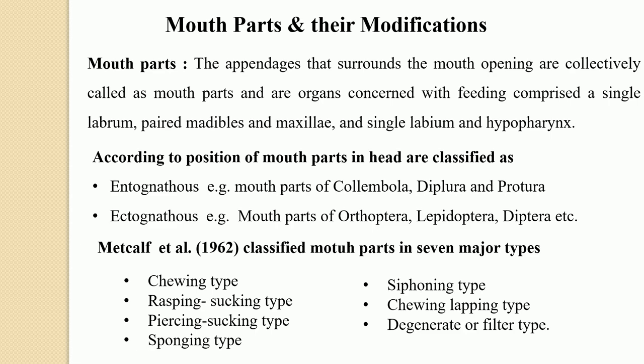The appendages of mouth parts are variably modified among insects in relation to their feeding habit — whatever kind of feeding habit is shown by the insect, the appendages of the mouth parts are modified accordingly. Metcalf and co-authors in 1962 classified all mouth parts into seven major types: chewing type, rasping and sucking type, piercing and sucking type, sponging type, siphoning type, chewing and lapping type, and degenerate or filter type.